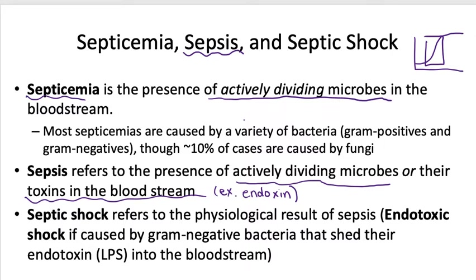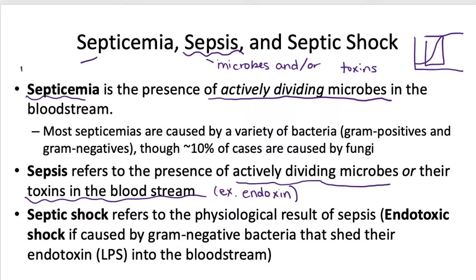Septicemias are usually bacterial — both gram-positive and gram-negative bacteria can cause bloodstream infections — but some cases are caused by fungi or viruses. We can name a septicemia for what causes it: bacteremia is a bacterial septicemia, fungemia is a fungal septicemia, and viremia is a septicemia caused by a virus. Sepsis refers to microbes and/or their toxins in the bloodstream, while septicemia refers strictly to microbes in the bloodstream.